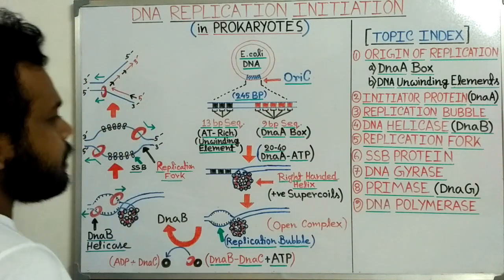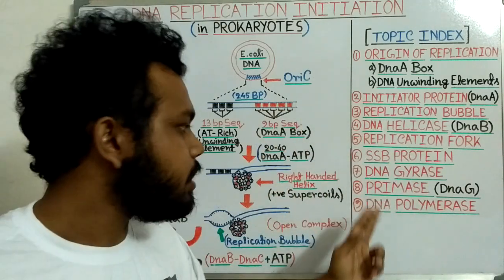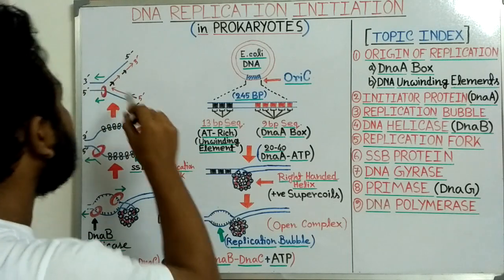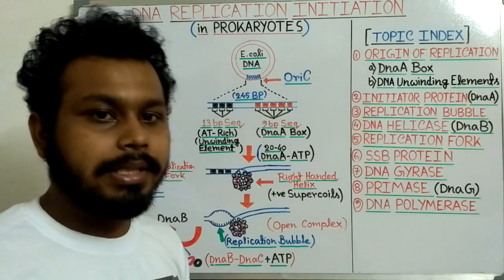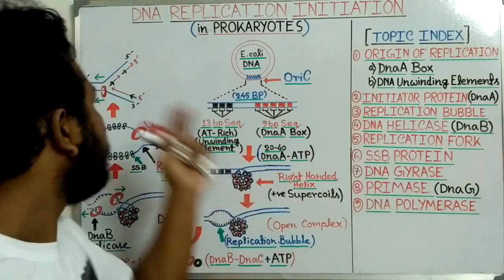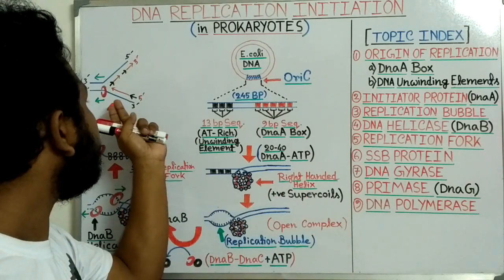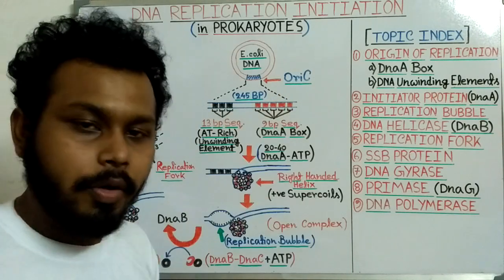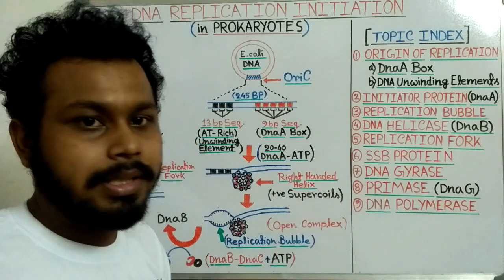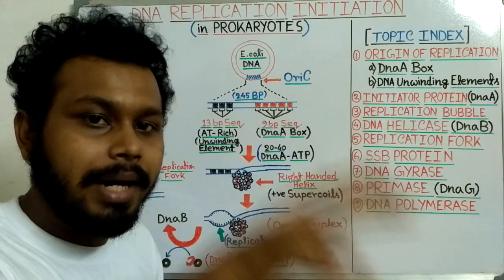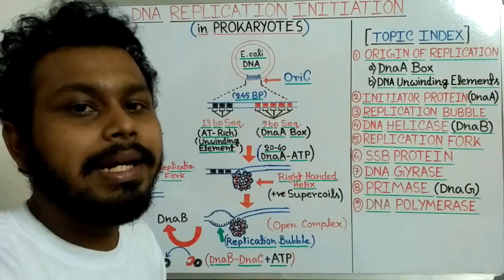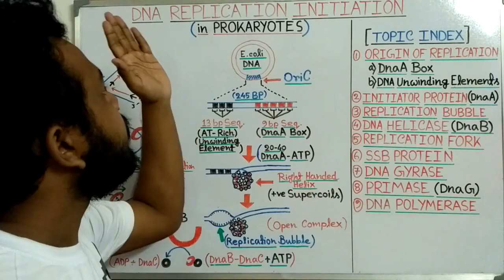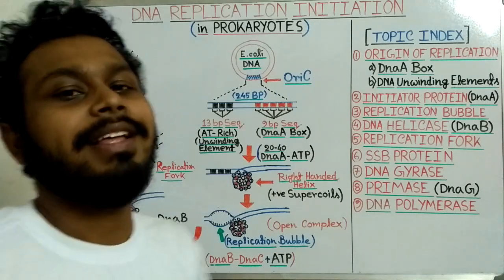Next, two more proteins arrive: primase and DNA polymerase. The role of primase is to add an RNA primer, and the role of DNA polymerase is to add new nucleotide bases from the RNA primer against the complementary bases of the parental DNA. Once primase and DNA polymerase start their work, the process enters the elongation stage. Everything before this point constitutes the initiation stage. This is the whole process of DNA replication initiation in prokaryotes.